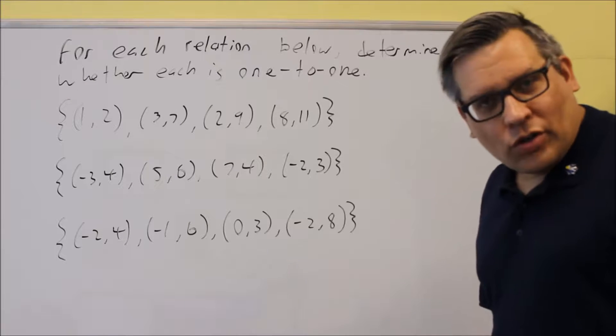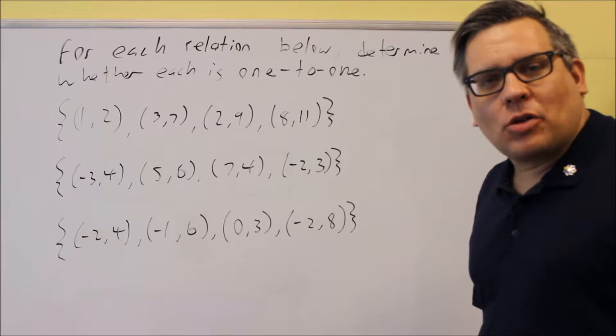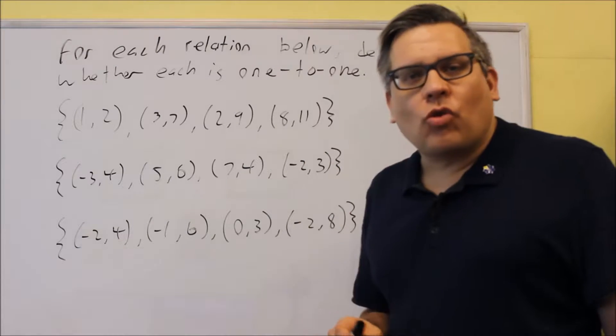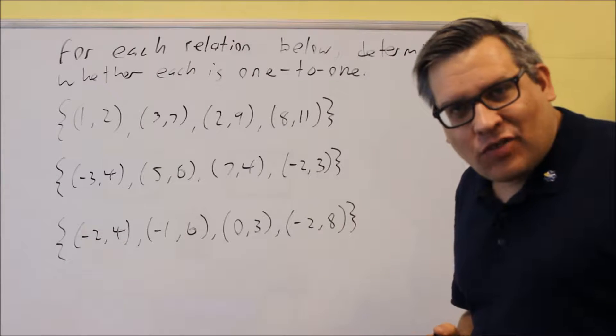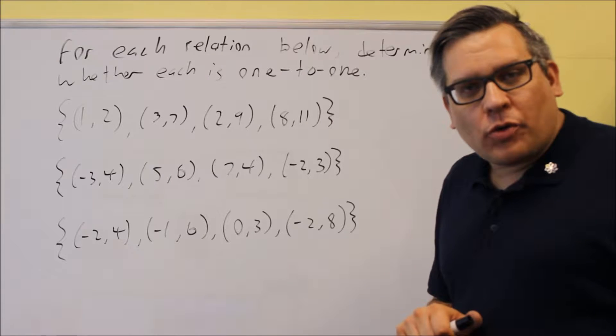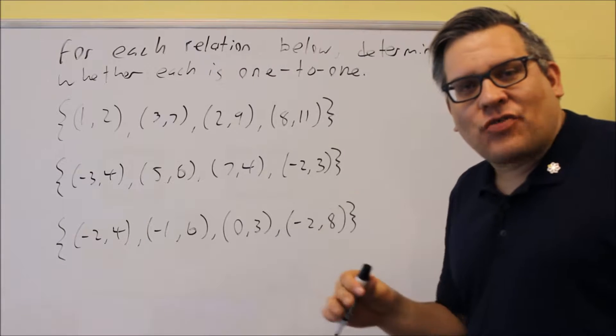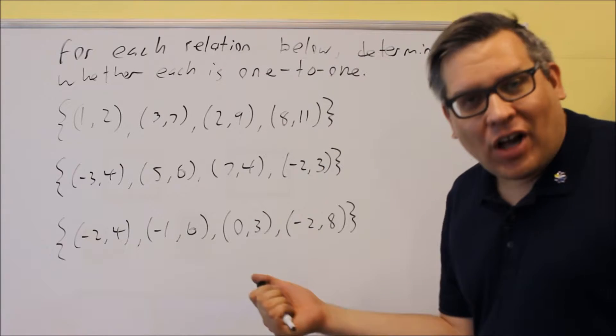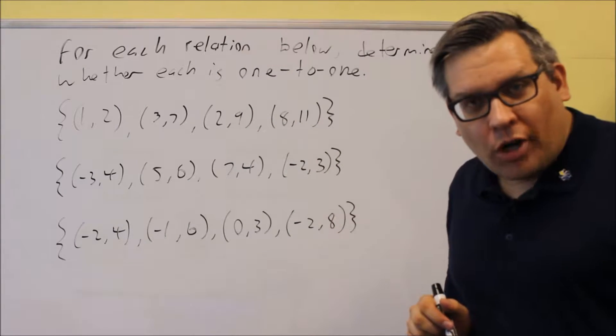In this section we're going to talk about 1 to 1 and what it means. I mentioned in the notes that in order for something to be 1 to 1, you have to have for each y value, each y value can only have one x value. So it's actually the opposite of what we refer to as a function. For functions, each x value can only have one y value, but now we're talking about each y value can only have one x value to mean that we have something that's 1 to 1.